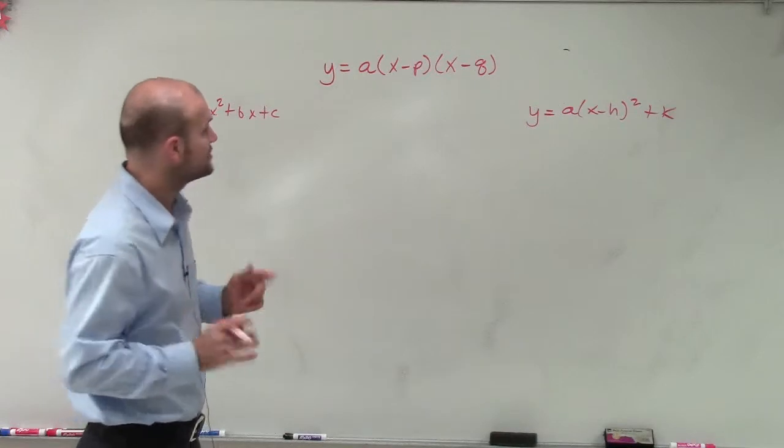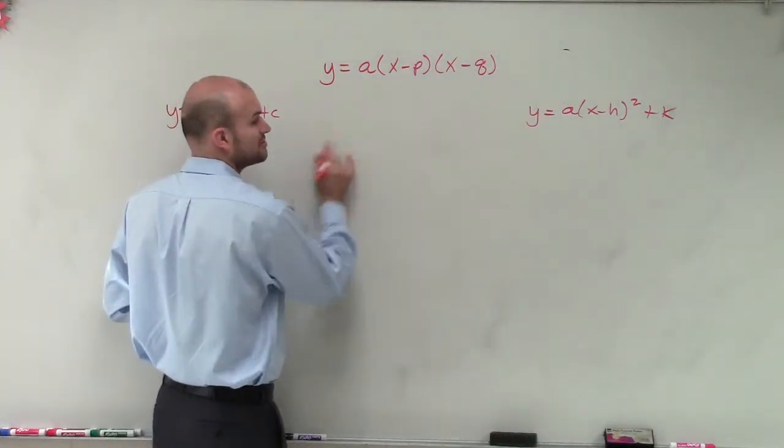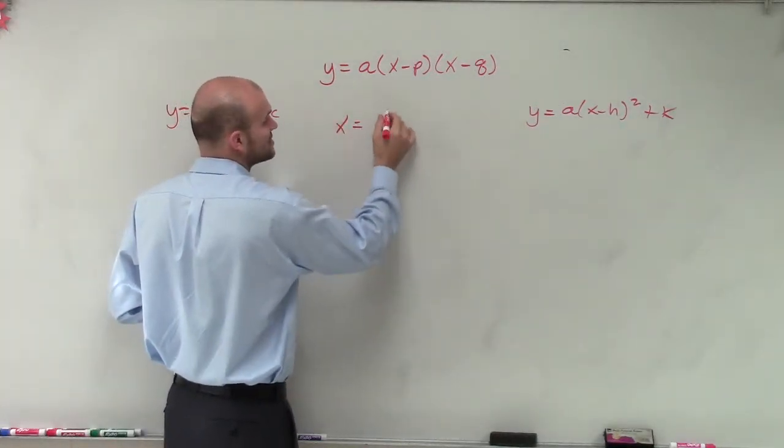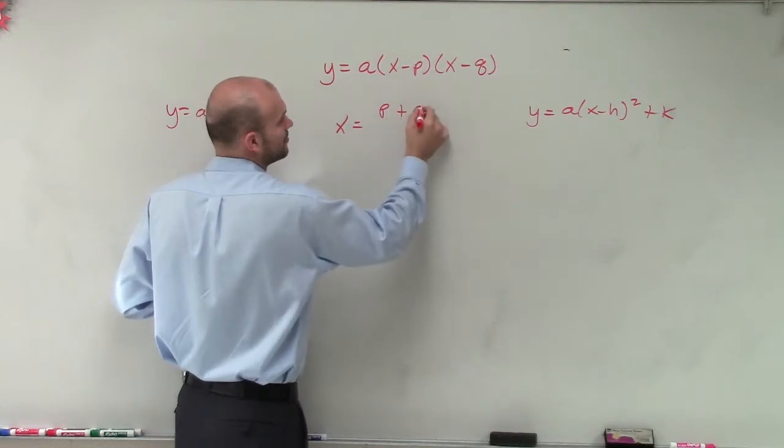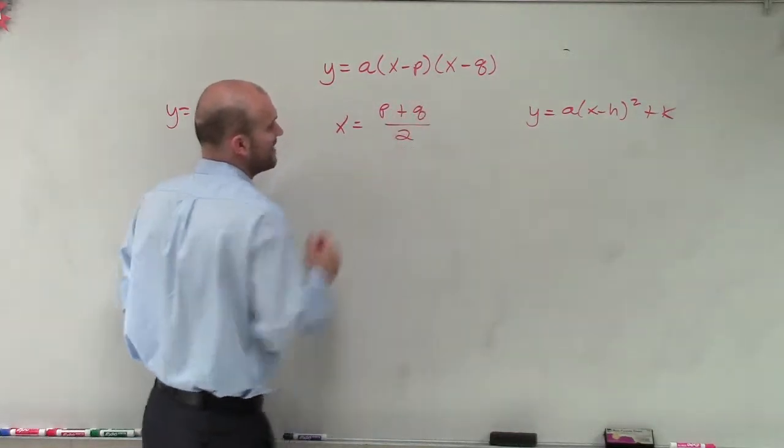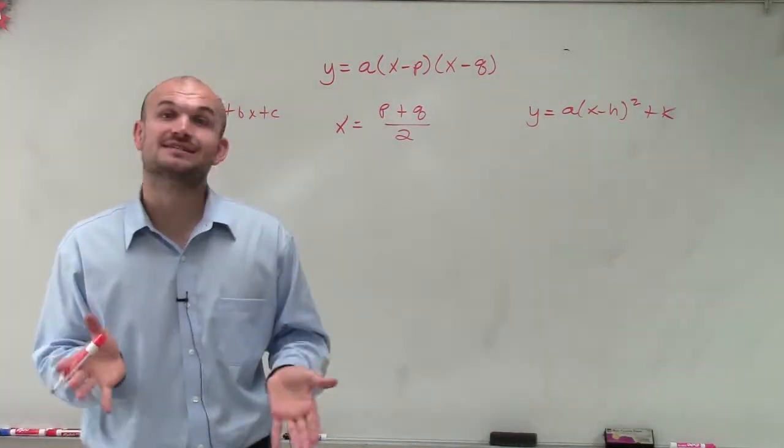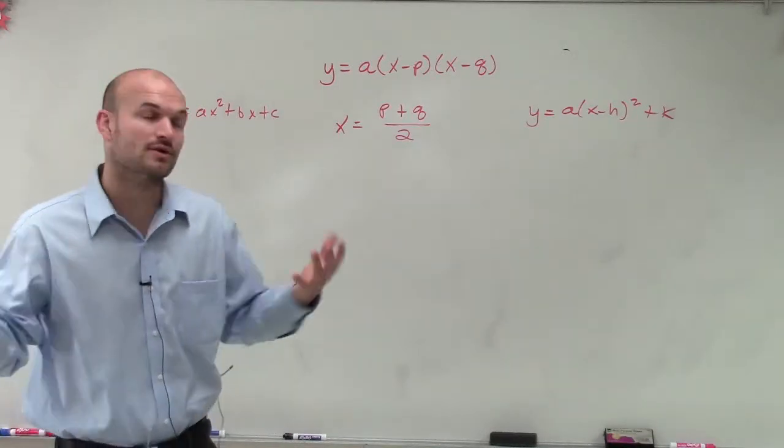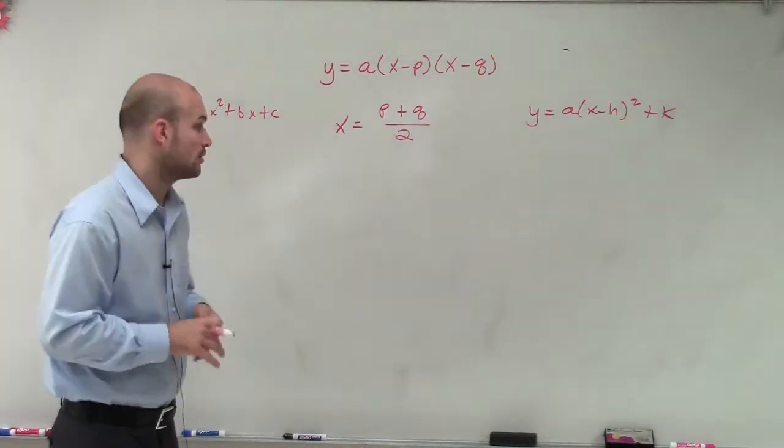what I'm going to do is just take the axis of symmetry, which is remember x equals. So x equals, what we're going to do is do p plus q divided by 2. That's going to give us our axis of symmetry. Remember, our vertical line that's going to be symmetrical for our quadratic.